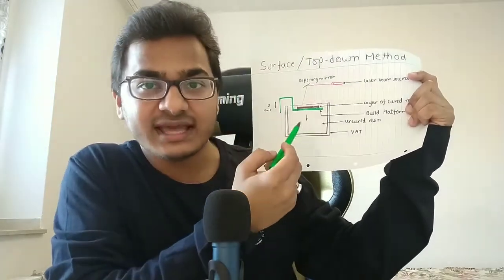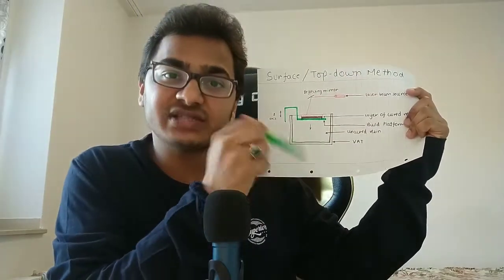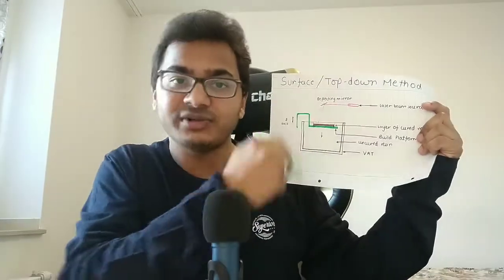After formation of each layer, the build platform moves downwards, as represented by this arrow. The build platform moves down after formation of each layer, and that's why it's known as the top-down method.